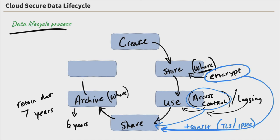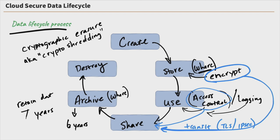Once the data's life cycle has ended, we reach the destroy phase. This is where we're going to properly sanitize or destroy our data. In the cloud, the best specific option to destroy data is cryptographic erasure, or crypto shredding. Once we crypto shred our cloud data during the destruction phase, we're done — that is the data life cycle.